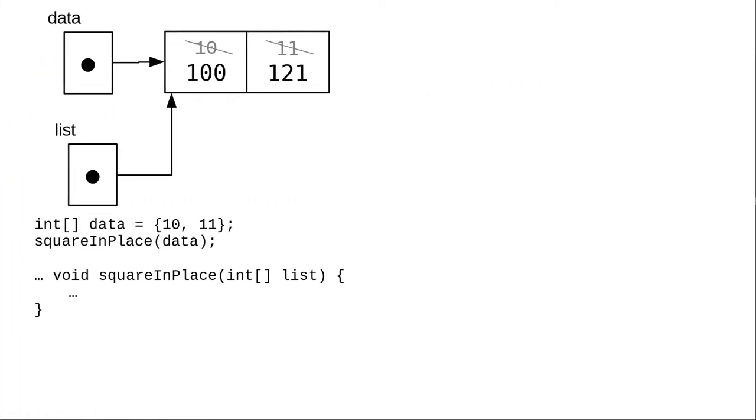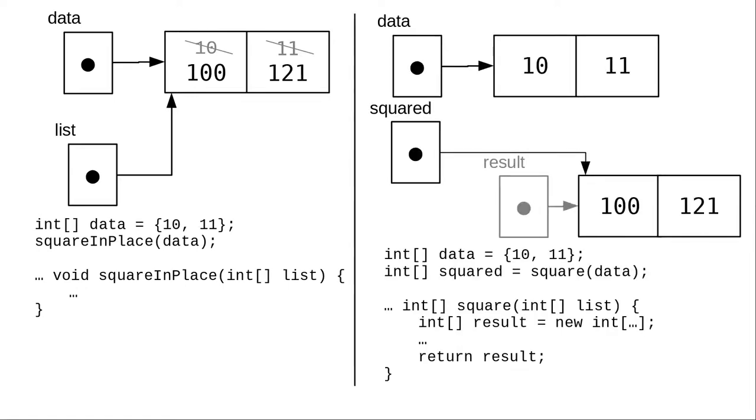So, which should you do? Update arrays in place? Or return a new array? If you're in an environment where memory is at a premium and you don't need the original array, then update it in place.